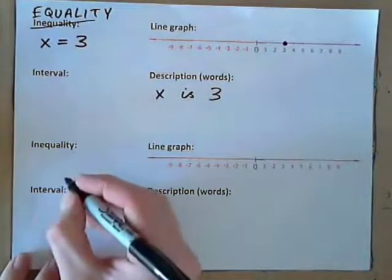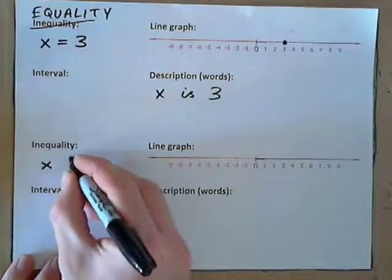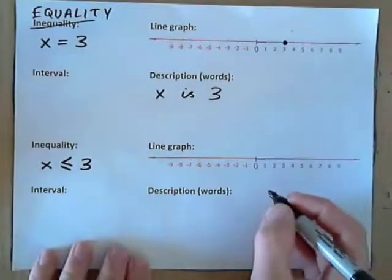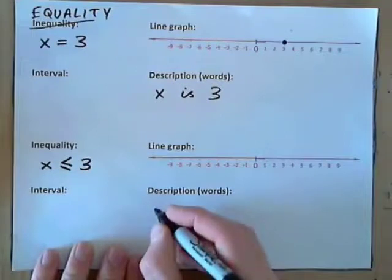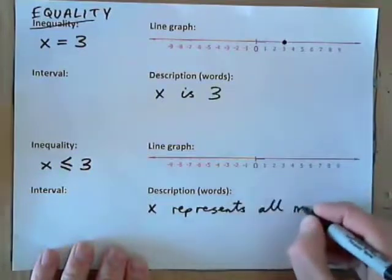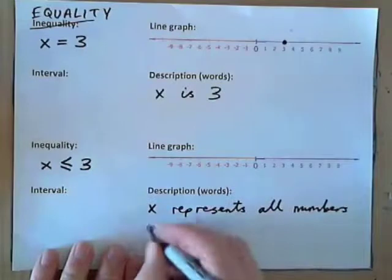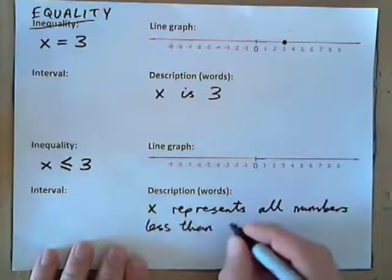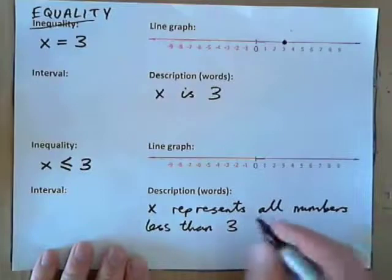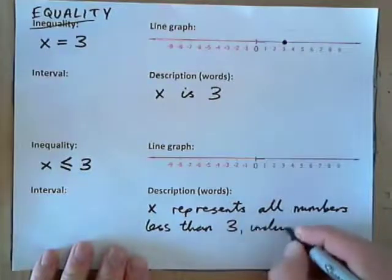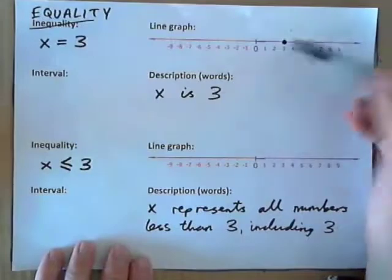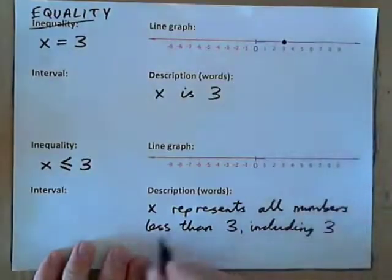Now, an inequality would be something like this: x is less than or equal to 3. How would we describe that in words? x represents all numbers less than 3 and 3 — so, less than or equal to 3. All numbers less than 3, and you could also say including 3. So, x represents all numbers less than 3 including 3.